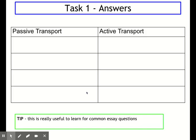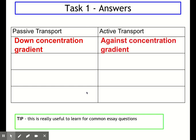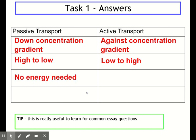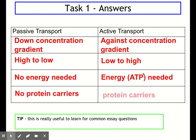Your table should have looked something like this, with passive transport on one side and active on the other. Down the concentration gradient should be under passive, and against the concentration gradient under active. Passive should have high to low, whereas active should have low to high. Passive should have no energy needed, while active should have energy or ATP needed — don't worry about ATP if you haven't done biology before, we'll come back to that in area six. No protein carriers required for passive transport, whereas active uses protein carriers. A useful exam tip: try to memorize a table like this, as comparison questions between passive and active transport are very common in tests and exams.